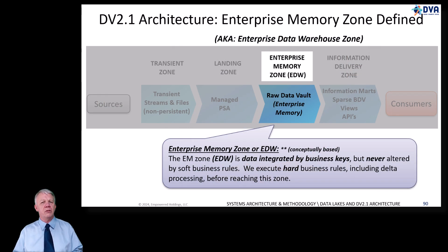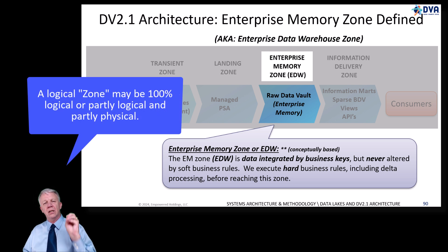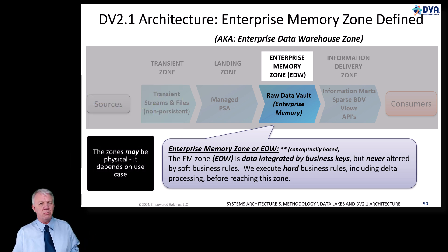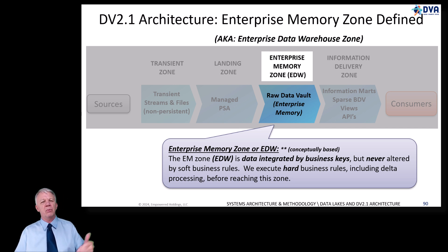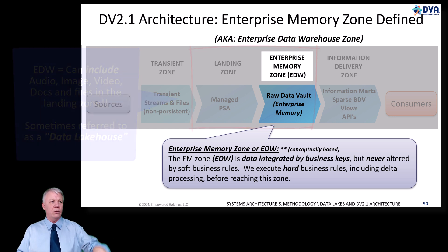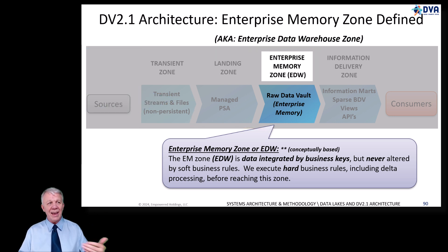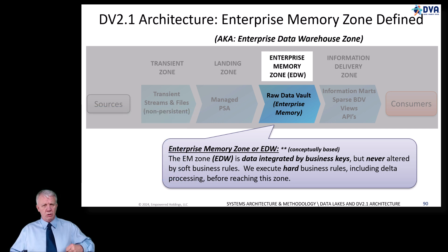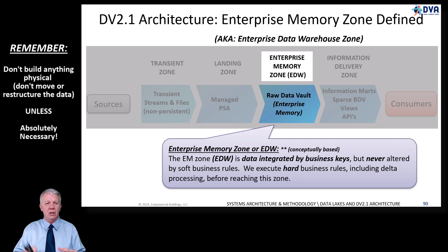The enterprise memory zone is conceptually based — each one of these zones is logical or conceptual in nature, not necessarily physical. You can't point at a database and say that is my enterprise memory zone. Your enterprise memory zone might reach backwards into the landing zone — into curated images, videos, audio files, or documents that have been pre-processed through AI, ML, or image recognition. So you can't draw a hard boundary and say my data warehouse is in a relational database. You've got to open your thinking to logical and conceptual — this is very important for the future of data warehousing, BI, and analytics.